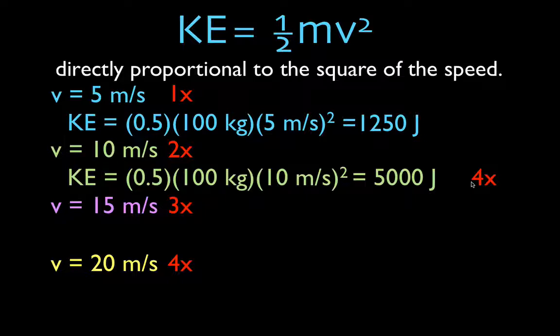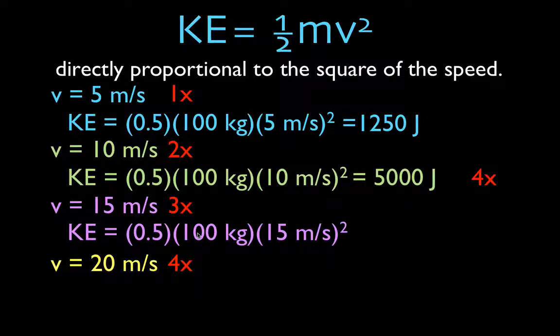Now what about when we triple our velocity? So we have the same object, the same 100 kilogram object, 15 squared times 100 times 0.5 is simply 11,250. And you'll notice that that is 9 times as much kinetic energy when you triple the velocity.